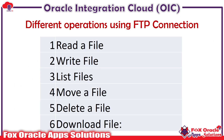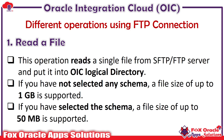There are six types of operations available on FTP connection. The first is read a file, the second is write a file, the third is list a file, the fourth is move a file from one directory to another on the FTP or SFTP server, the fifth is read a file from SFTP server, and the sixth is download a file from the SFTP server to the OIC local directory. Read a file and download a file are used for a similar purpose but there are minor differences between them.